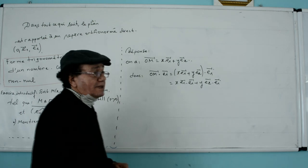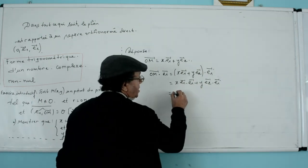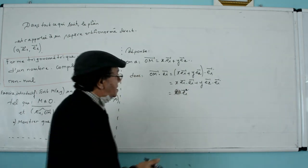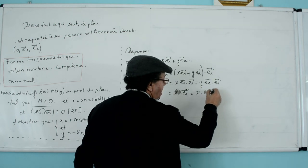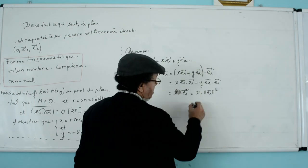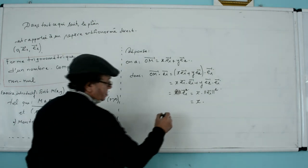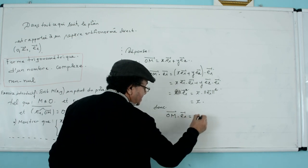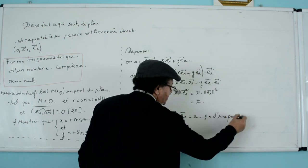The reference being orthonormal, that is to say that the vectors are unit vectors. So, this first scalar will be equal to the scalar square of E1, which is the norm of E1 squared. The reference being orthonormal, the norm of E1 is one, which gives OM scalar E1 equals X. So, we have on one part, OM scalar E1 equals X.